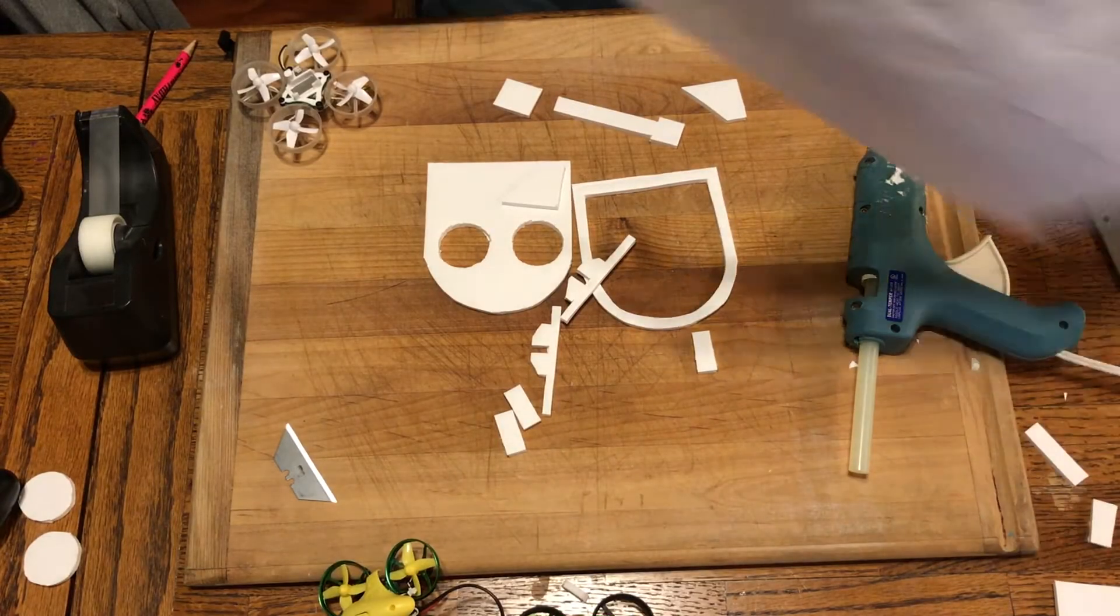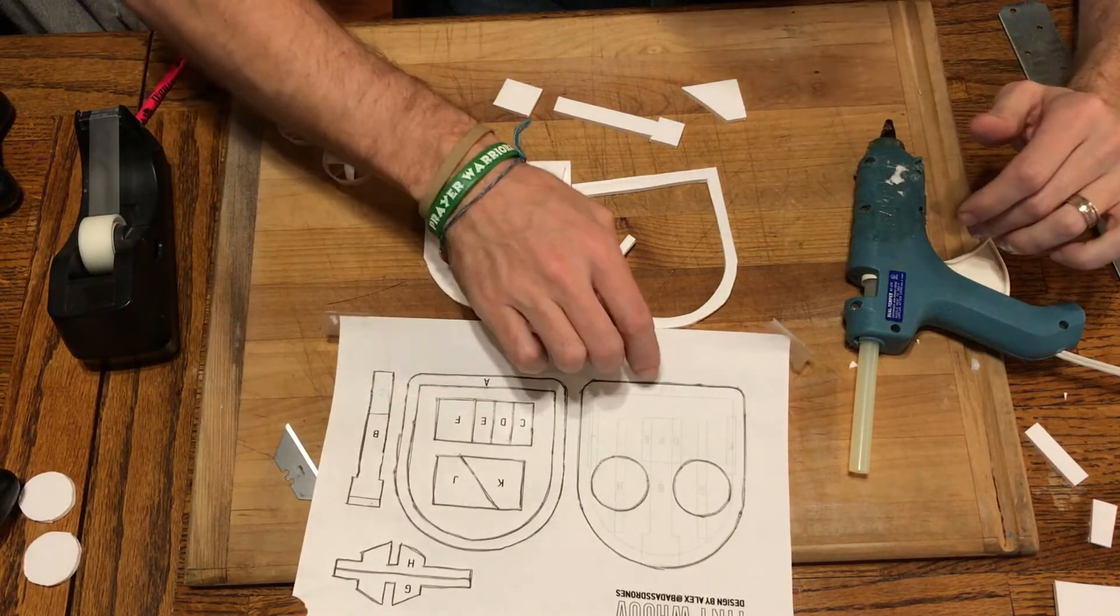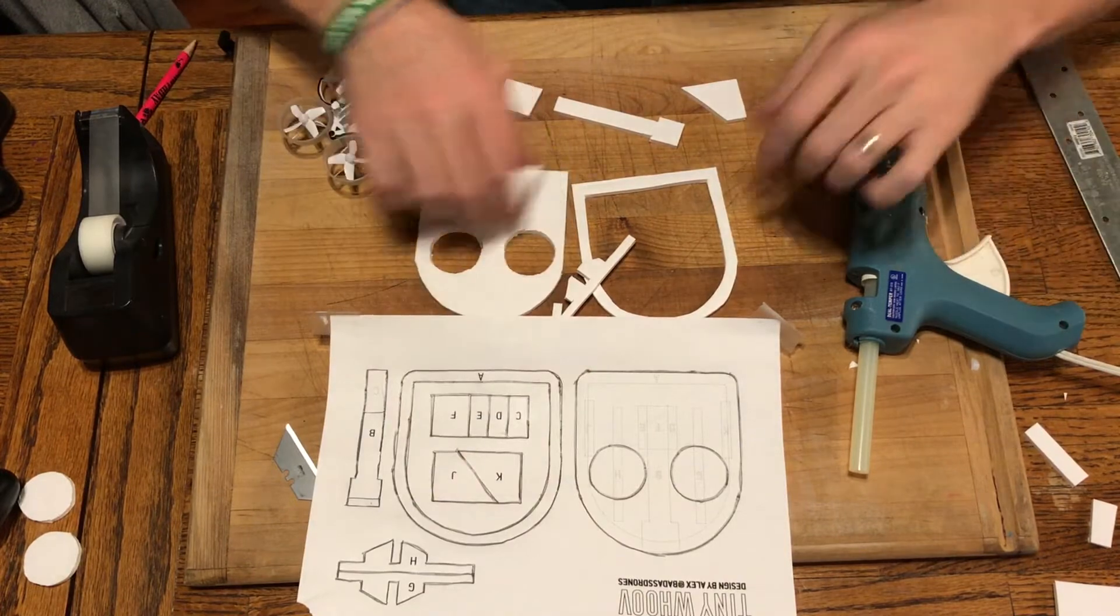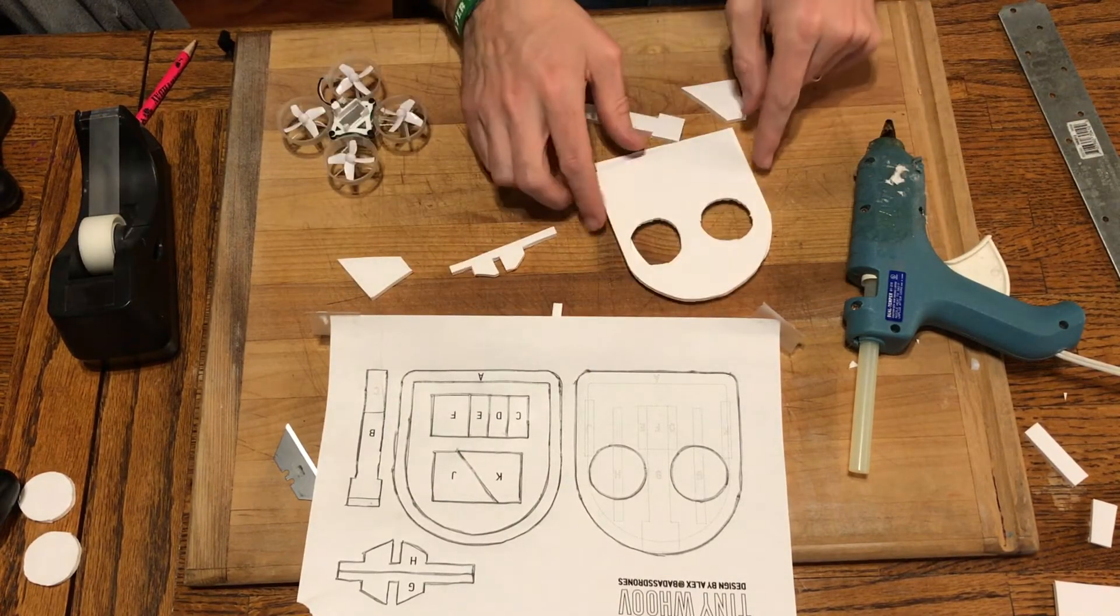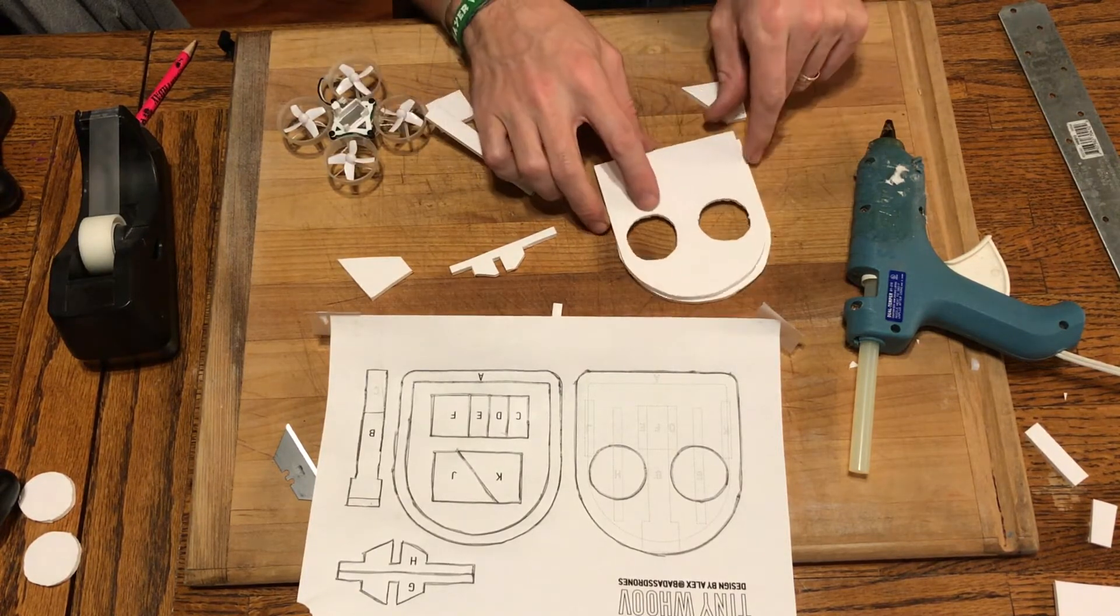All right. So now with our hot glue gun, nice and hot, we can kind of follow the plans here. And you can see here on this one, they actually have kind of drawn out where everything's supposed to go. So what we're going to start with is the actual body of our hovercraft here. We're going to glue this guy together. So this is the top of the hovercraft. You see it sits like that.